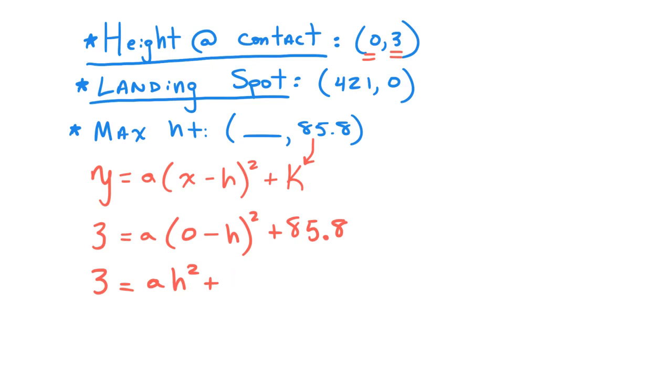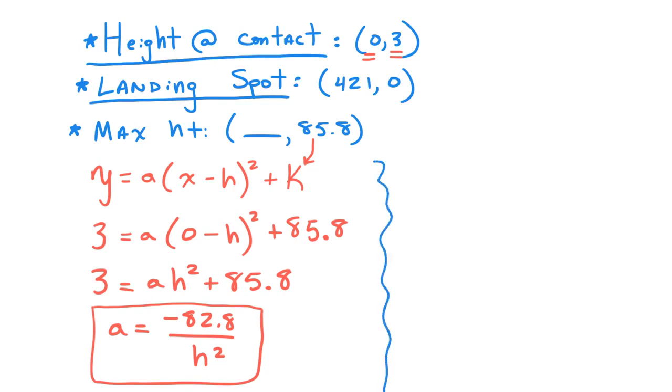I'm going to be plugging in 3 for my y value and 0 for my x value. This is going to help me come up with an equation. I'm substituting in 85.8 for k. We have three variables we have to find by the end of this: a, h, and k. So if I subtract 85.8 from both sides, I'm going to get negative 82.8 divided by h squared. That gives me a equals negative 82.8 over h squared. That's going to be important because I'm going to be able to use this for substitution later on.